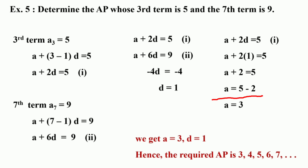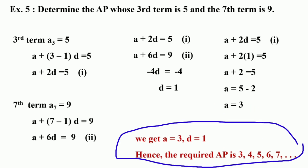So the first term of the arithmetic progression is 3 and the common difference is 1. Therefore, the required arithmetic progression is 3, 4, 5, 6, 7 and so on.